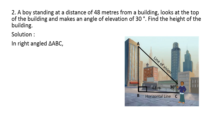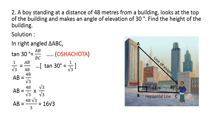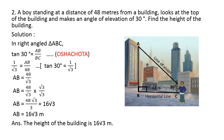In right-angle triangle ABC, we use tan of angle 30°, because BC (the adjacent side with respect to 30°) is given as 48 m, and AB (the opposite side) is unknown. So tan 30° = AB / BC. The value of tan 30° = 1/√3, giving 1/√3 = AB/48, so AB = 48/√3. Rationalising the denominator by multiplying numerator and denominator by √3, we get 48√3/3 = 16√3. Hence the height of the building is 16√3 metres.